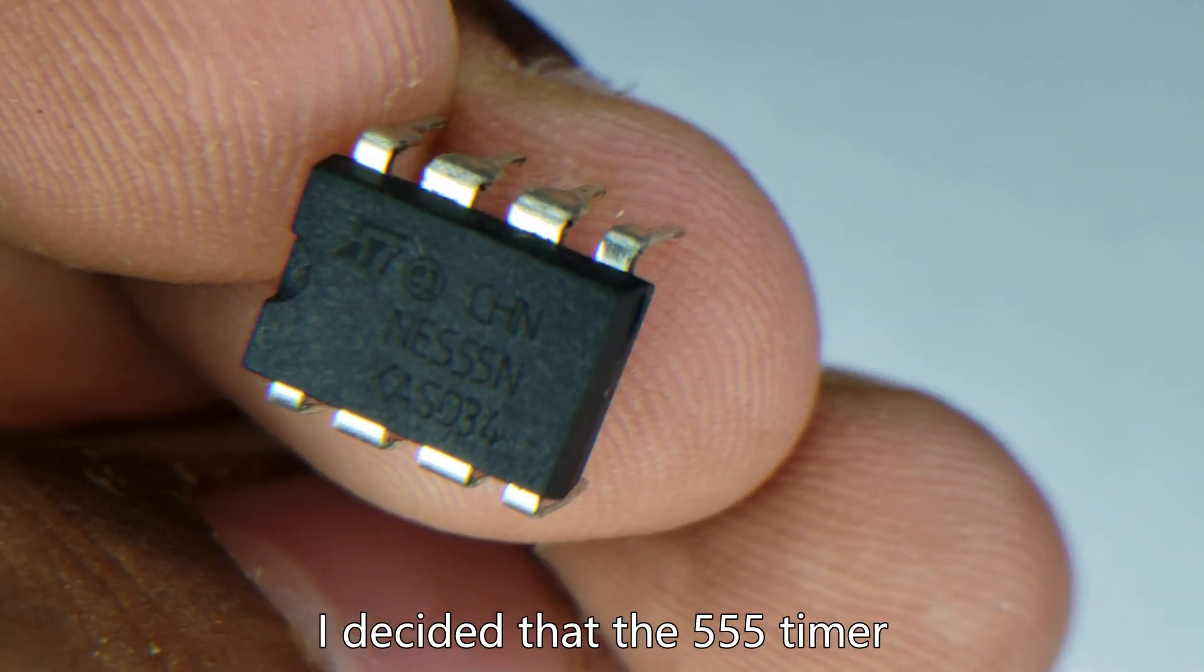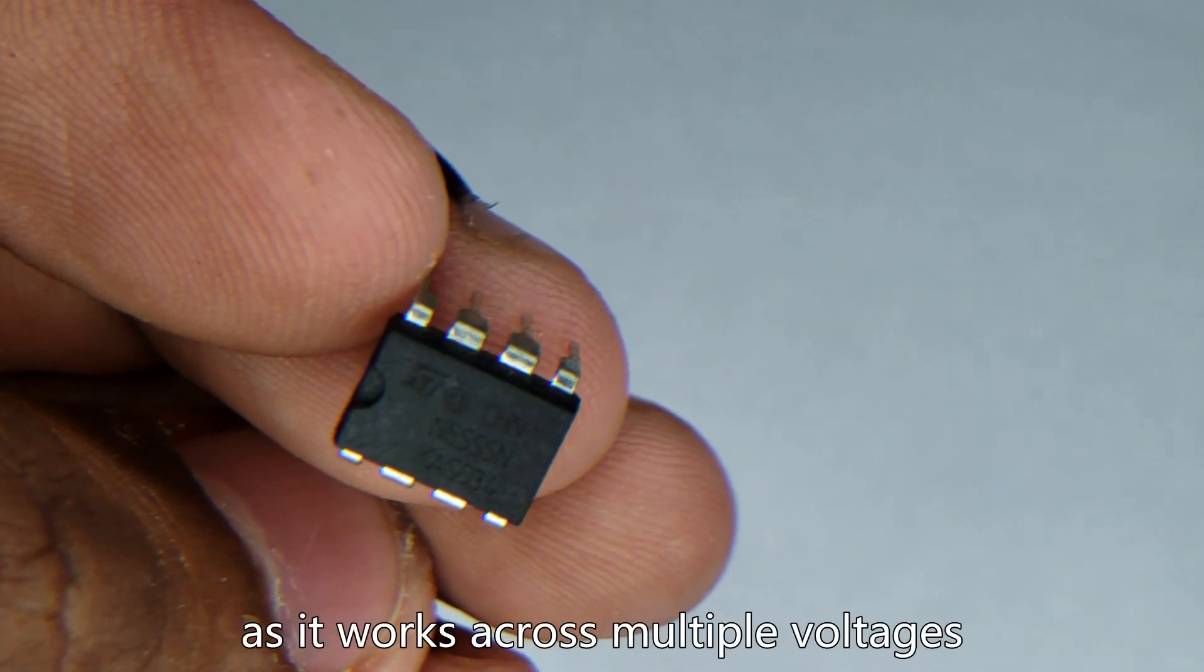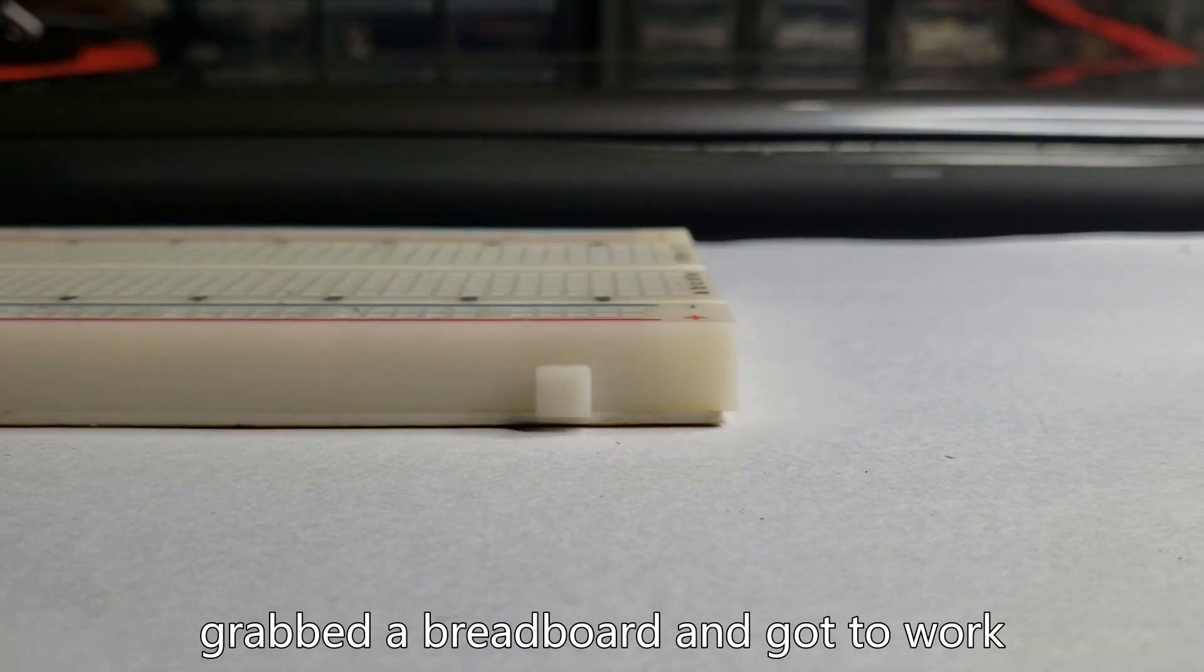I decided that the 555 timer would be the easiest way to generate the square wave as it works across multiple voltages, so I drew the schematic shown here, grabbed the breadboard and got to work.